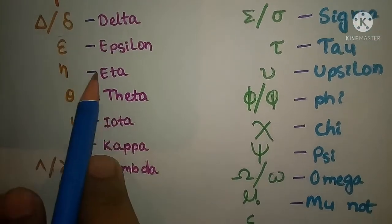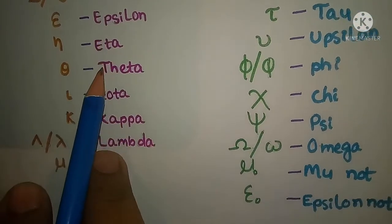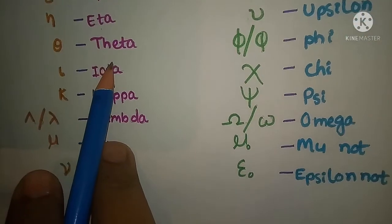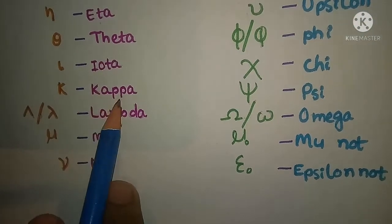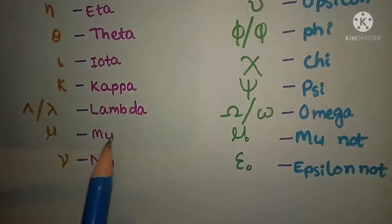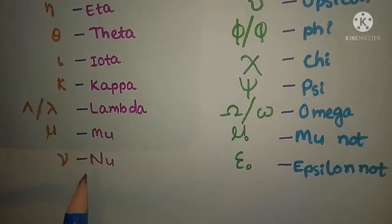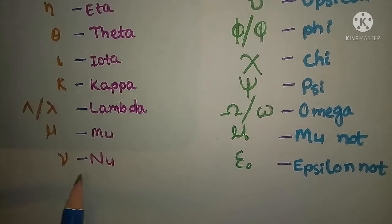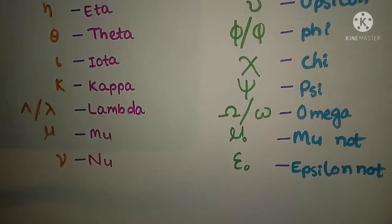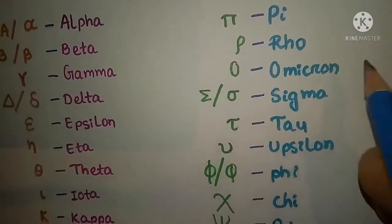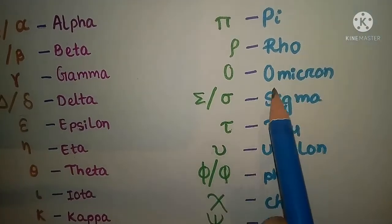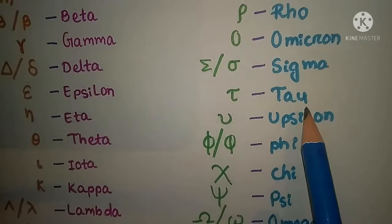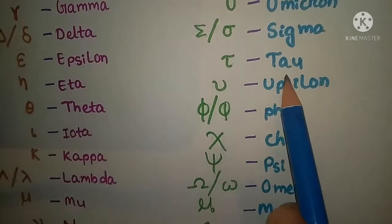Delta, epsilon, eta, theta, iota, kappa, lambda, mu, nu, xi, pi, rho, omicron, sigma, tau.